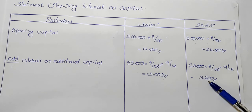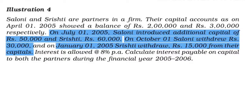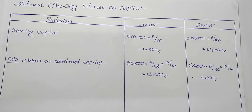The next item is: on October 1st, Saloni withdraws Rs. 30,000. In October, Saloni's amount is Rs. 39,000. In January, it is Rs. 15,000. That is the amount of withdrawing.